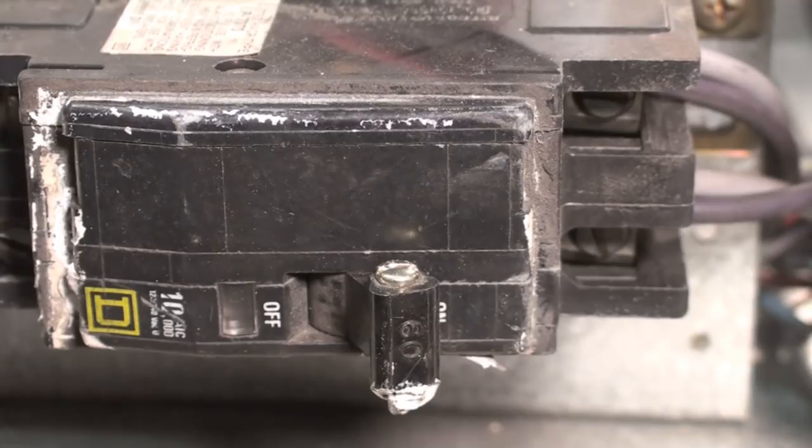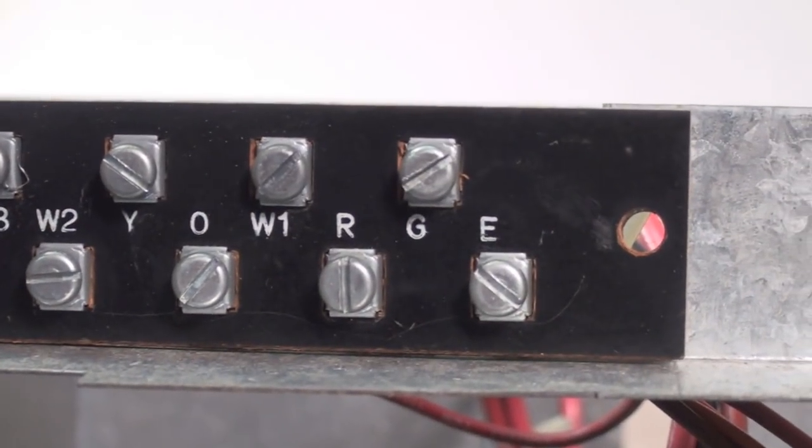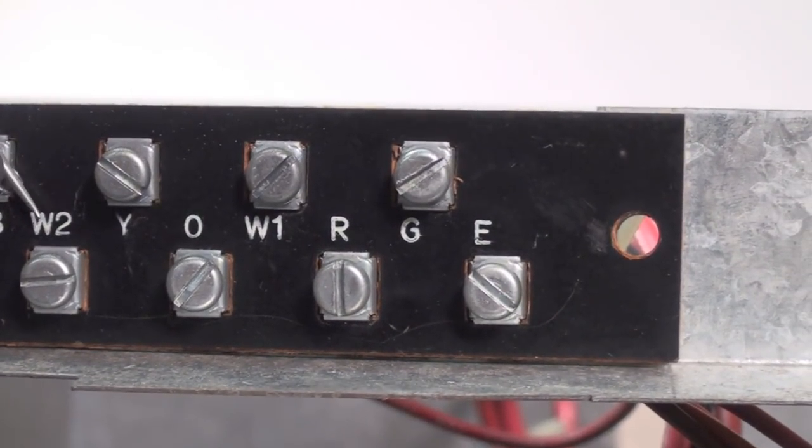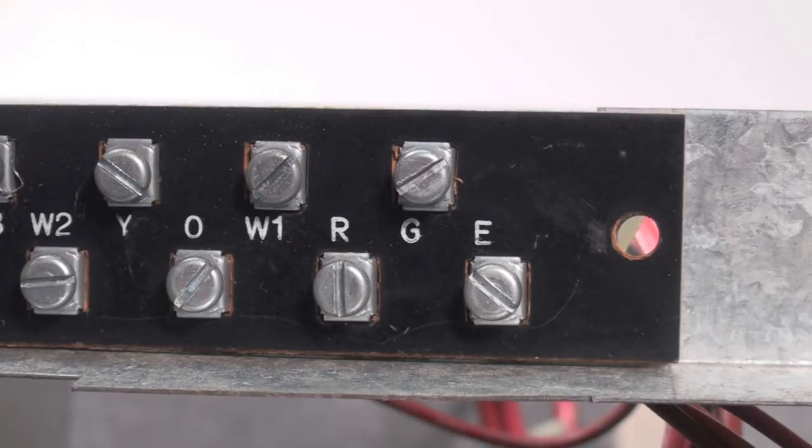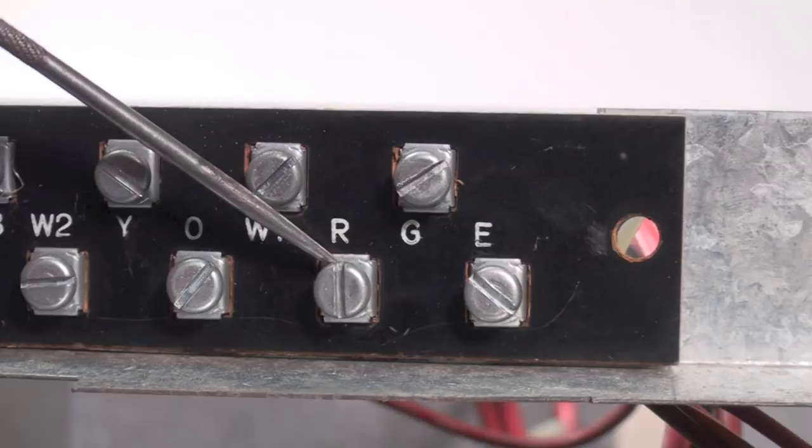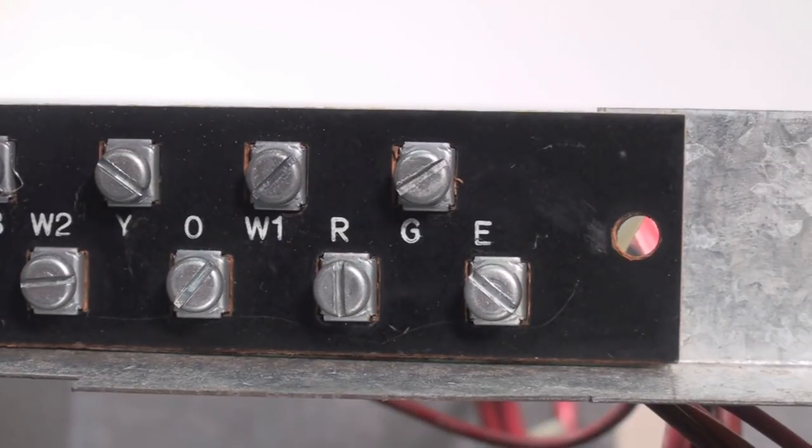Up here we have a terminal board where you hook your thermostat up. If this were the simplest of any, you'd have the thermostat—one would be hooked to R and one would be hooked to W1.